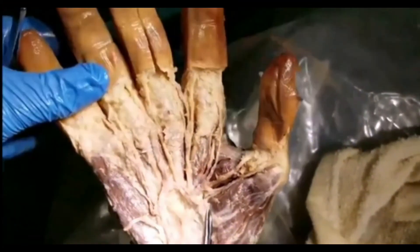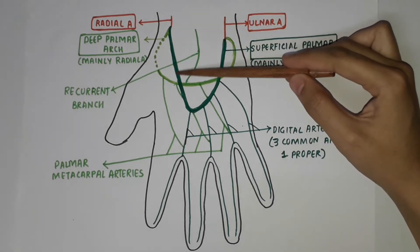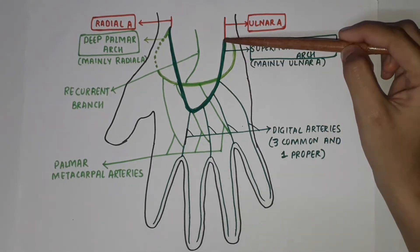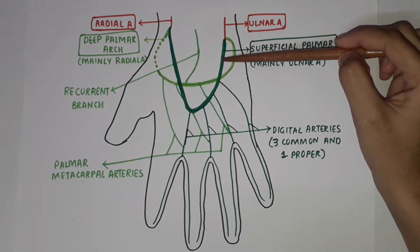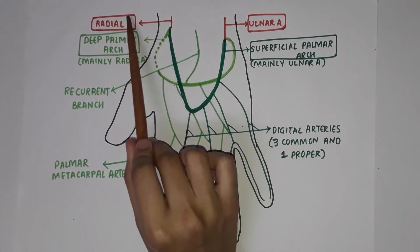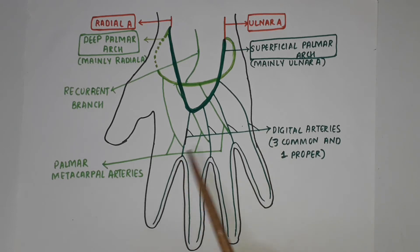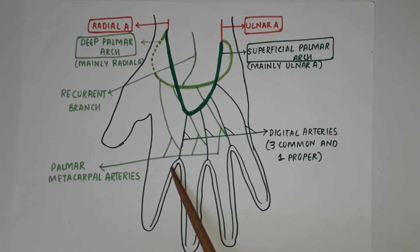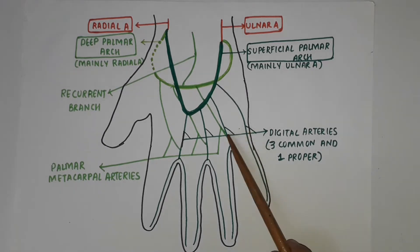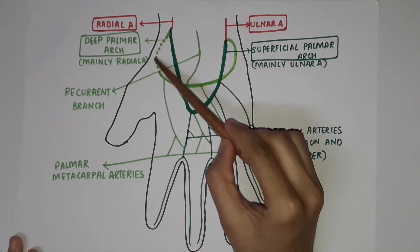Now let us understand these arches in detail. The superficial palmar arch — this dark green color arch — is formed by the superficial palmar branch of the ulnar artery, and laterally it is joined by the superficial palmar branch of the radial artery. The arch gives off three common digital arteries and one proper digital artery. The common digital artery at the digital cleft divides into two proper digital arteries, which supply the adjacent sides of the respective fingers. In all, the digital branches supply the medial three and a half fingers.